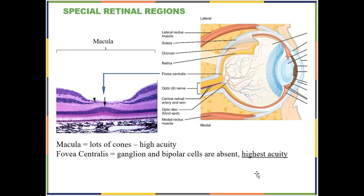The macula lutea is the whole region here where there are more cones than rods. All of the light information that hits the macula produces a sharper image than would be produced by other parts of your retina.